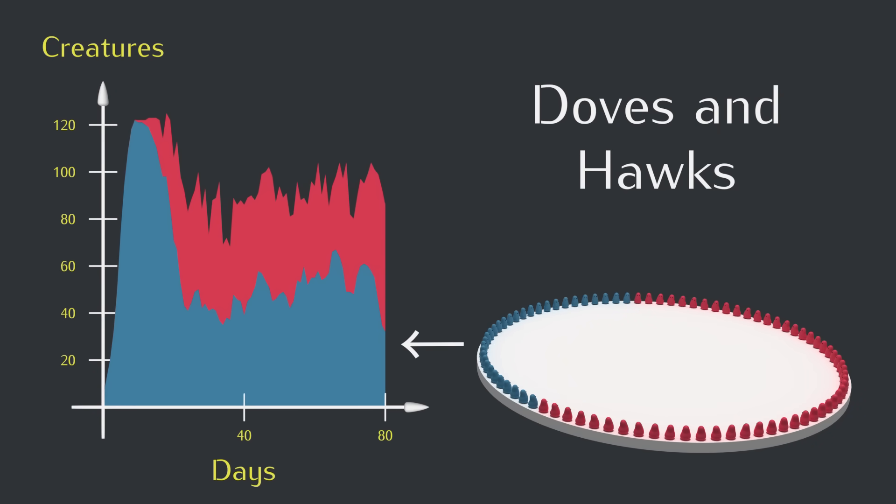And there are also fewer creatures overall, even with the same amount of food. Here's an example of how natural selection doesn't necessarily act for the good of the species.